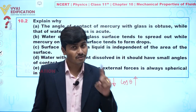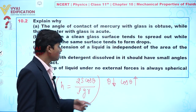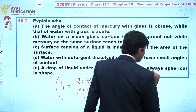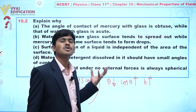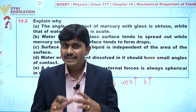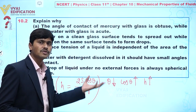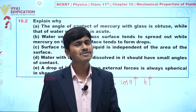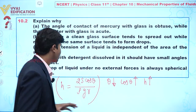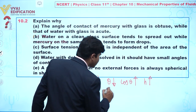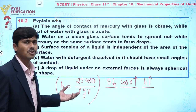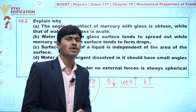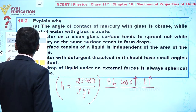When theta is small, cos theta is large — for example, cos 0° = 1 and cos 30° = √3/2. So as theta decreases, cos theta increases and therefore h increases. The purpose of detergent is to decrease surface tension and reduce the contact angle so that the liquid rises to a greater height, allowing it to remove dirt more effectively.